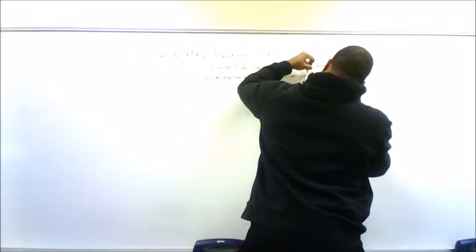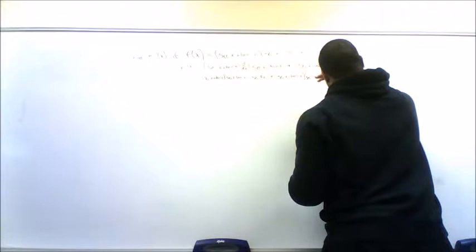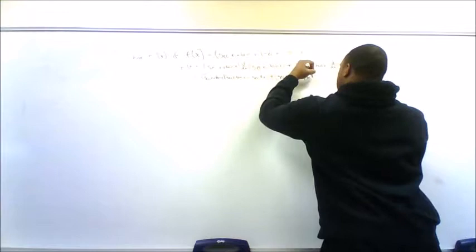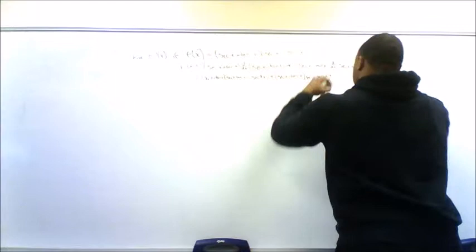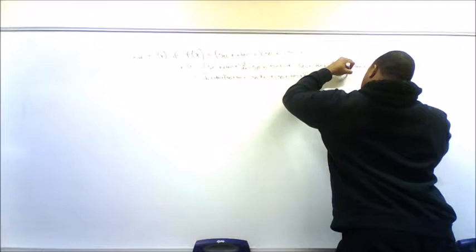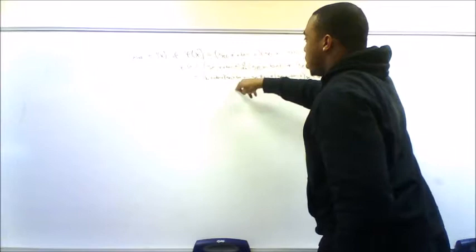I know this because of my trigonometric derivative rules. So, secant x tan x. And the derivative of tan x is a positive secant squared x. And that is my final answer: secant x plus tan x times secant x tan x minus secant squared x, plus secant x minus tan x times secant x tan x plus secant squared x.